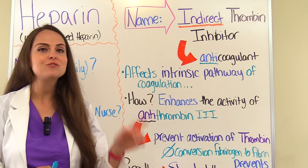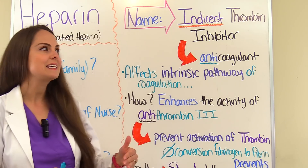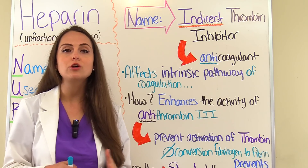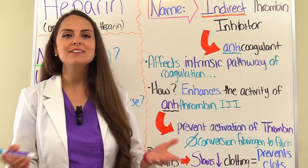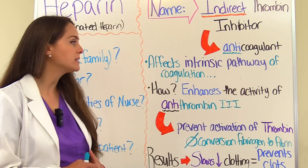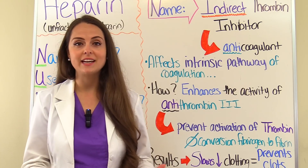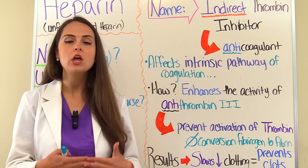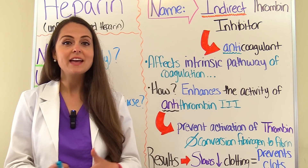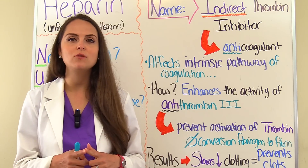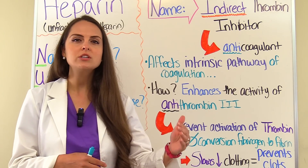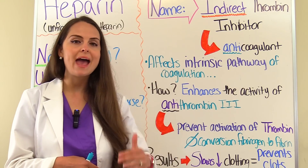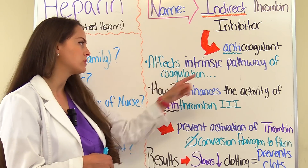Heparin indirectly inhibits thrombin, which makes it an anticoagulant that's going to alter the clotting process. It affects the intrinsic pathway of coagulation, which is activated when there is internal trauma to the vascular system, compared to the extrinsic pathway, which is activated when there's external trauma. That's how warfarin/Coumadin works — it affected the extrinsic pathway — but heparin affects the intrinsic pathway.